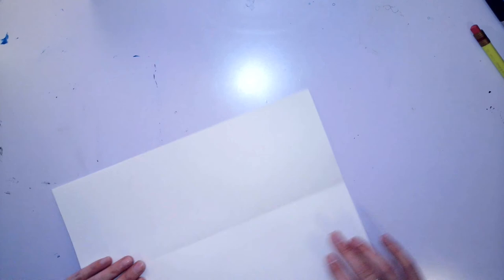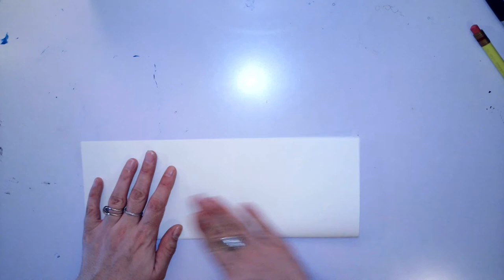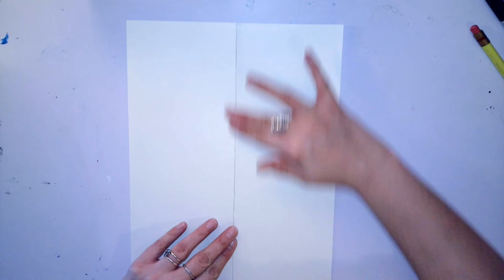So we're going to start by folding our paper in half lengthwise. You want to line up the corners as best you can. Crease your paper, open it back up, and we're creating a line of symmetry for our symmetrical drawing.